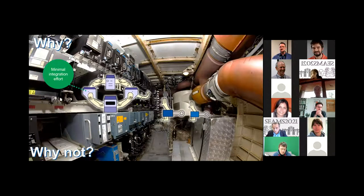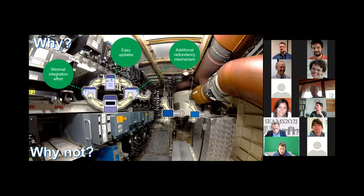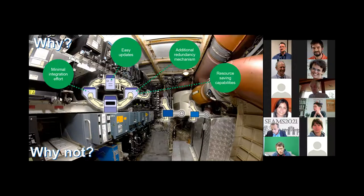Why would we like to do that? First, creating this distributed system needs quite some effort in the integration phase. Second, an autonomic avionic system would allow easy updates later on, both hardware and software. It would also allow additional redundancy mechanisms and could save resources, because not all functions are needed in every flight phase.